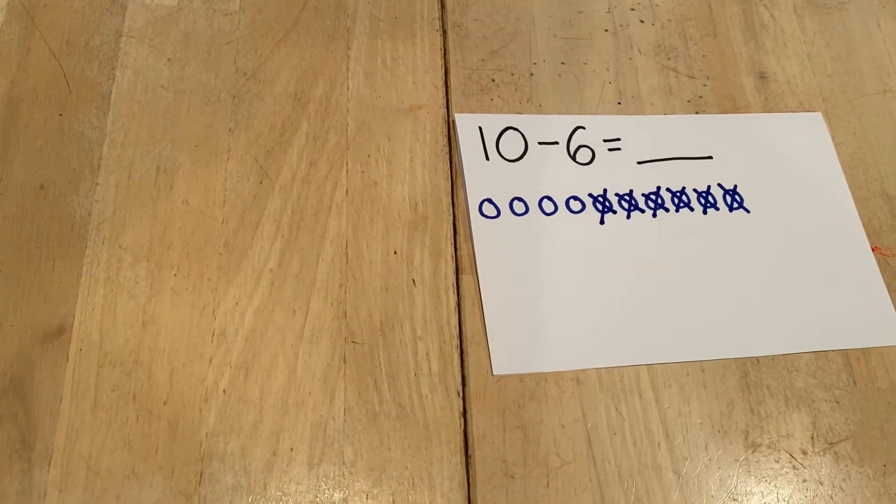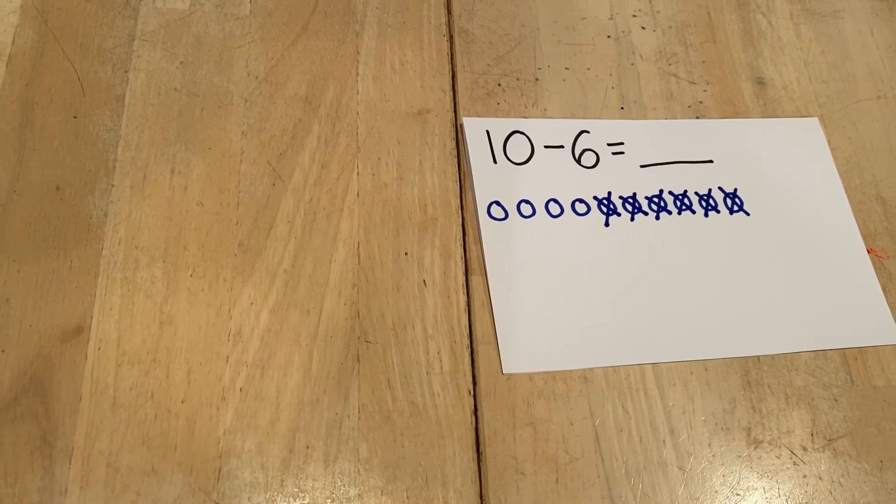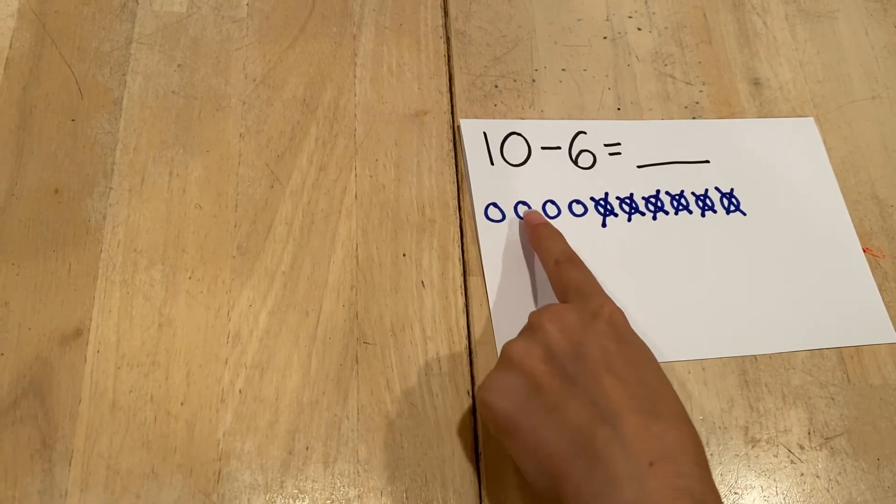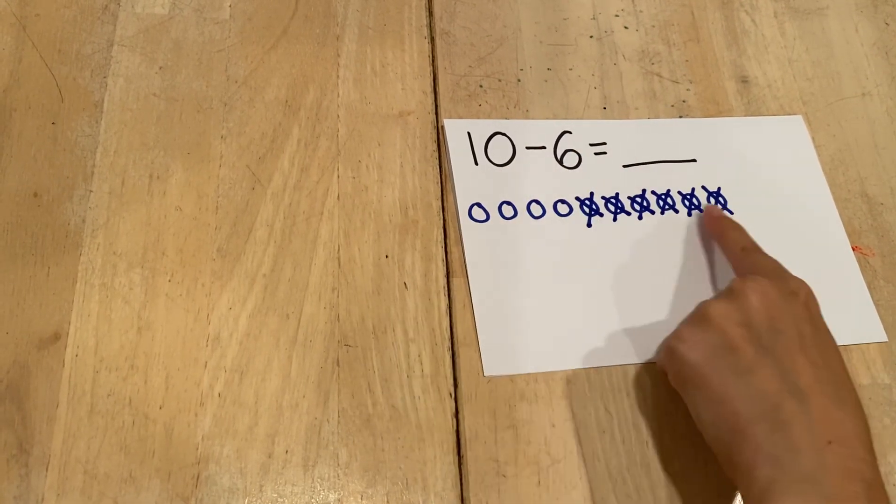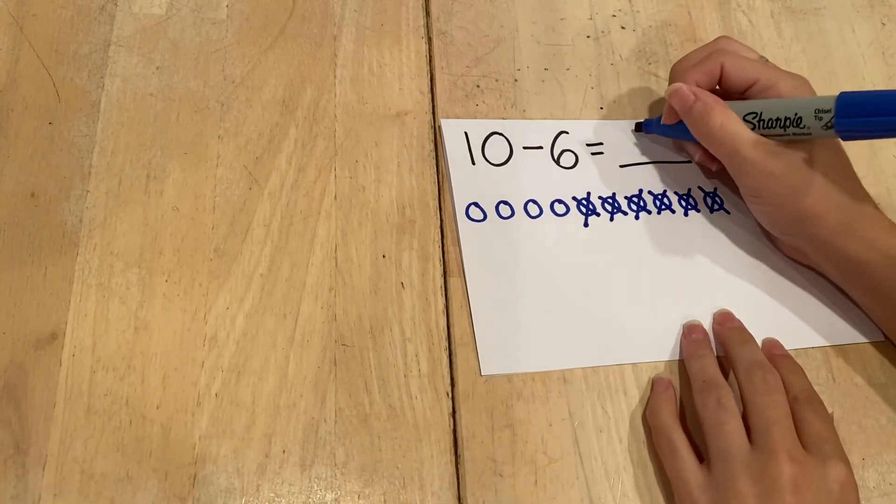I'm going to count the ones that do not have an X in them, and that will be our answer. 1, 2, 3, 4. So 10 take away 6 equals 4.